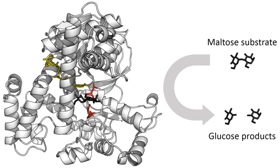The discovery that enzymes could be crystallized eventually allowed their structures to be solved by X-ray crystallography. This was first done for lysozyme, an enzyme found in tears, saliva and egg whites that digests the coating of some bacteria. The structure was solved by a group led by David Chilton Phillips and published in 1965. This high-resolution structure of lysozyme marked the beginning of the field of structural biology and the effort to understand how enzymes work at an atomic level of detail.